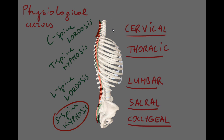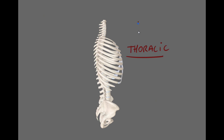So we have four physiological curves. There are 12 thoracic vertebrae in total and they are intermediate in size between cervical and lumbar vertebrae. Going from top to bottom, vertebrae will increase in size, so the largest of the thoracic vertebrae is T12.